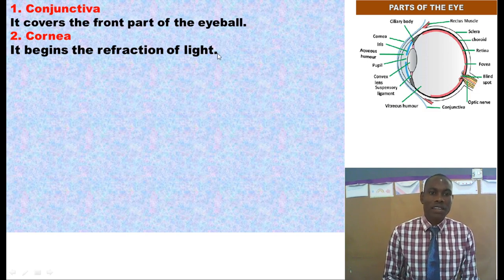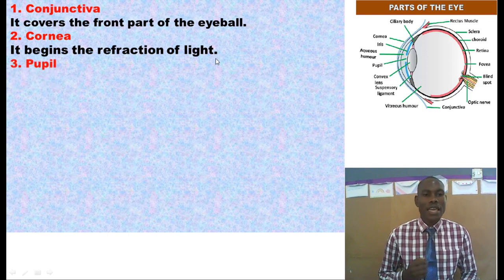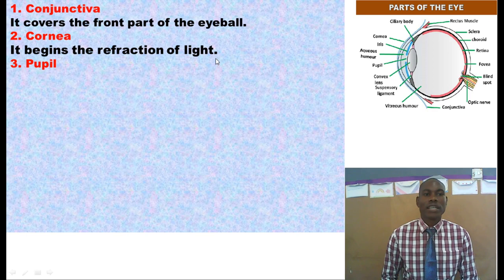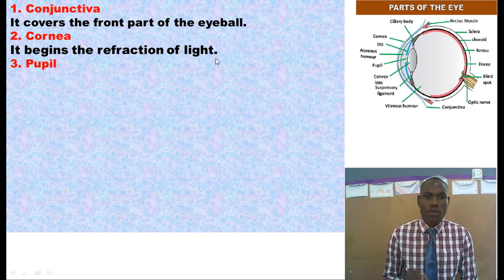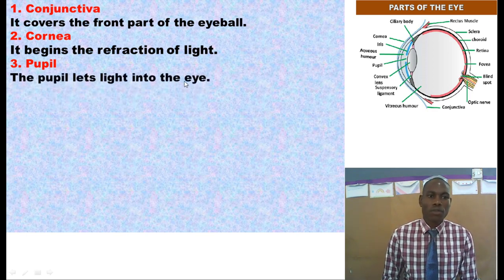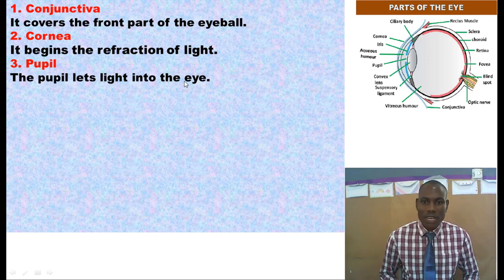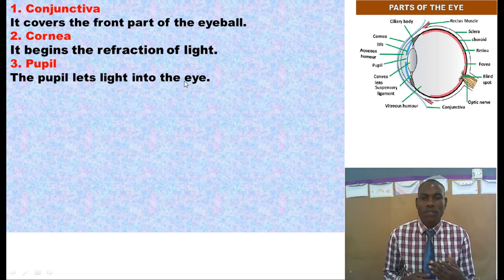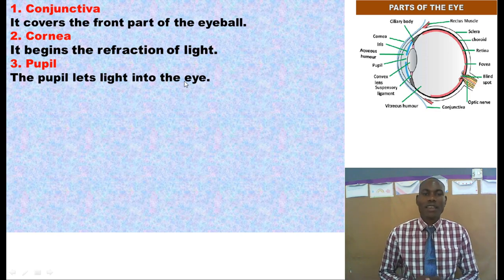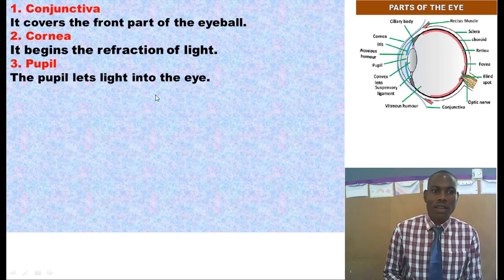When that light is refracted, it will enter the eye through a part that we call the pupil. What is the function of the pupil? The pupil lets light into the eye — it is that part of the eye that lets in light. Without the pupil, light will not enter the eye.